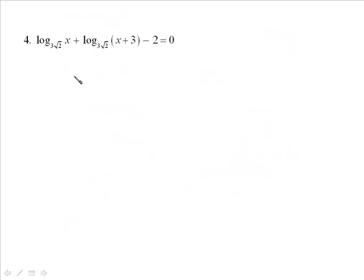Number 4. The log of x base 3 root 2 plus the log of x plus 3 base 3 root 2 minus 2 is equal to 0. Well, nothing really remarkable about this one except that it will require a little bit of manipulation, nothing too strenuous though. The log terms will stay on the left. Take that 2 over. Apply the product law where we can multiply these two together. So log of x times x plus 3 base 3 root 2 is equal to 2.